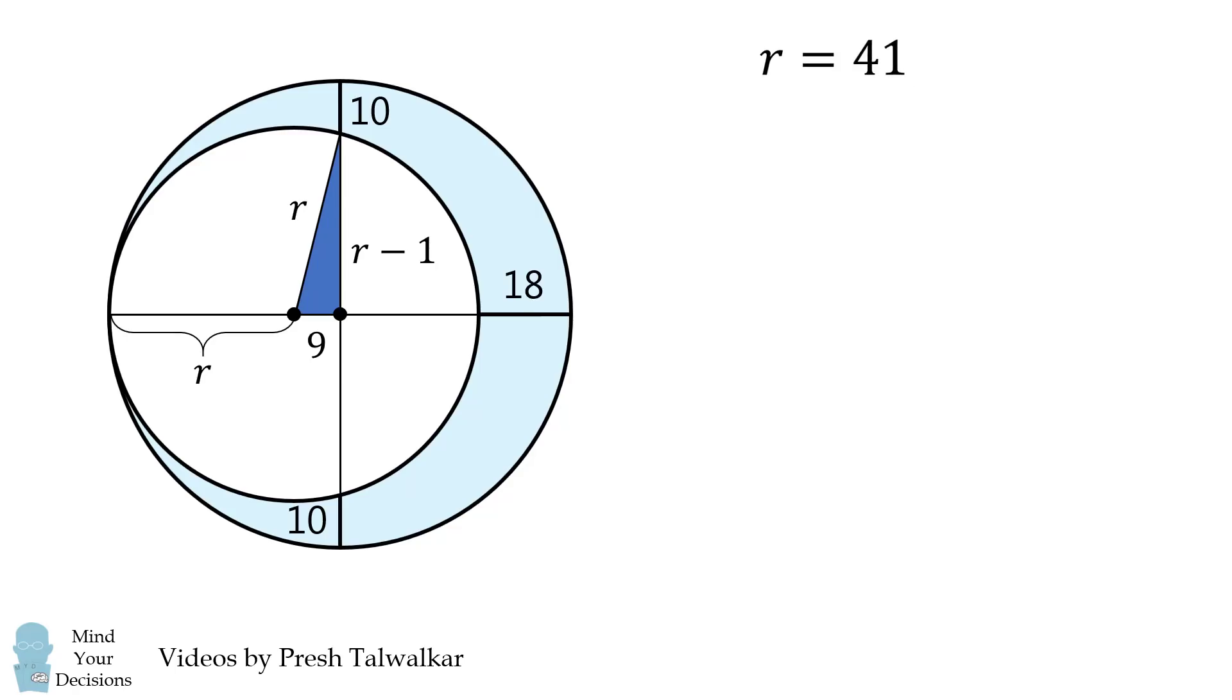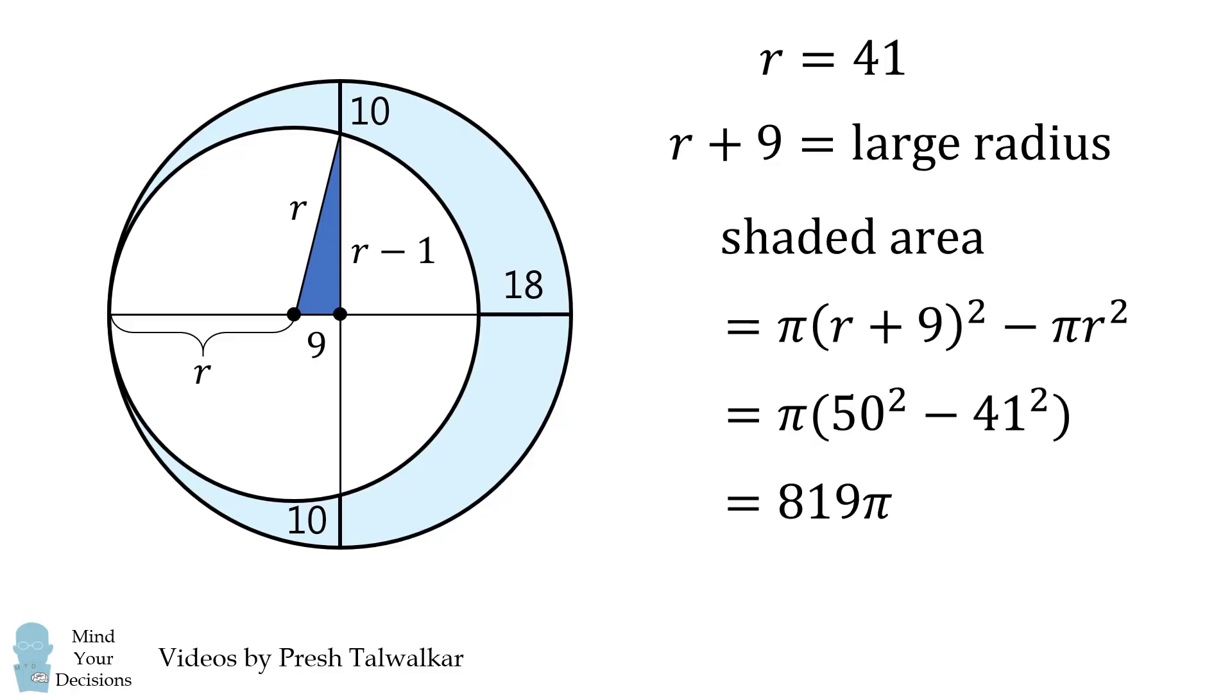Now recall that the large circle's radius is equal to R plus 9. We can solve for the shaded area as the area of the large circle minus the area of the small circle. It'll be this formula, and it simplifies, and that'll be equal to 819 pi, and that's the answer.